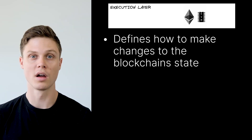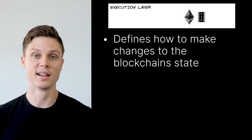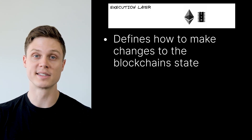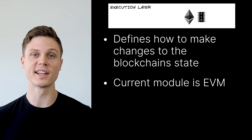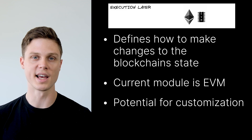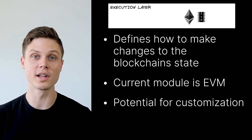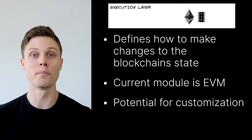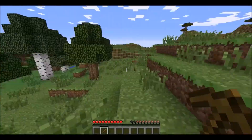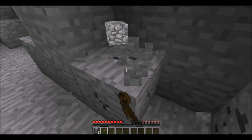The next layer is the execution layer. You may have already heard about the execution layer on Ethereum, and the OP stack also has an execution layer. This is the layer that defines how to make changes to the blockchain's state. The current module available for this layer is the EVM module — the Ethereum virtual machine — which is the same EVM used across many different blockchains to define how to make changes to the state. Modification to this execution layer has a lot of potential for customization. For example, there is a project called OPcraft which switched out the execution layer for a simulation of Minecraft. The entire state of the game was stored on chain, but any changes to that state, like gaining experience or crafting something, was handled by the actual game's code in the execution layer.